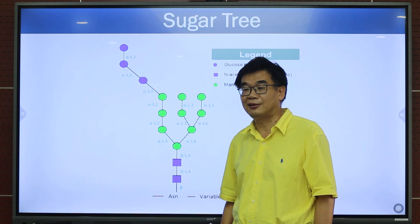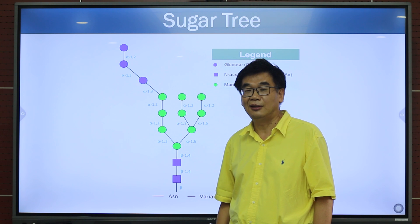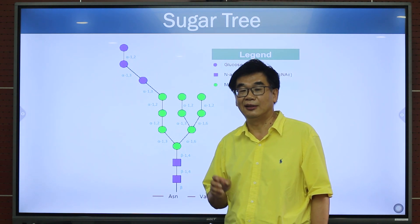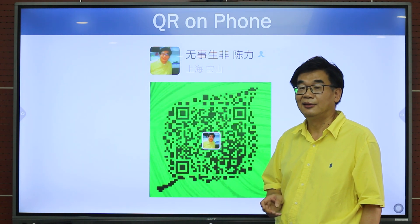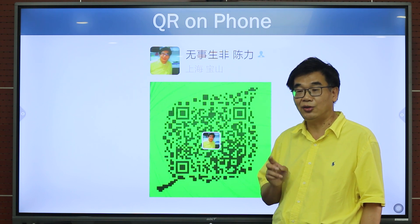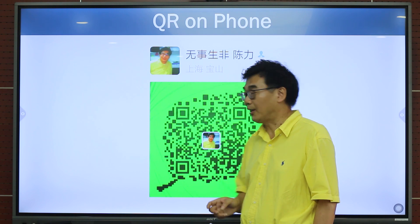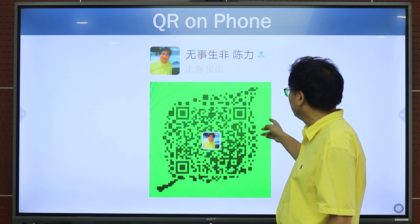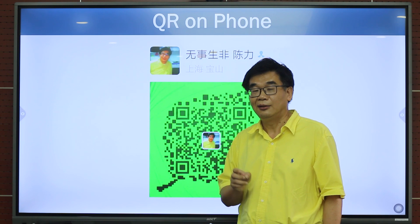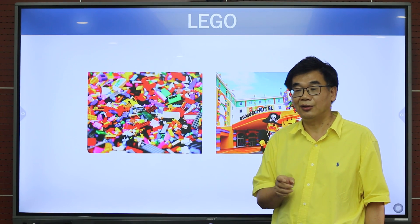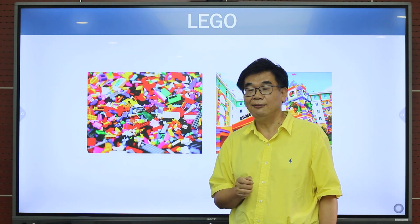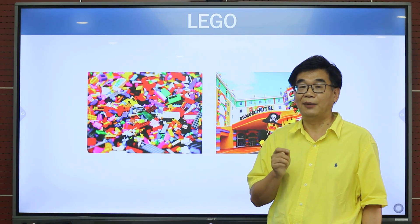50% of the proteins are glycosylated. Our cells are covered with sugar trees, conjugated with proteins and vitamins. We proposed that the sugar trees on the cells function like the QR codes we use in our daily life. We named the sugar tree the biological quick recognition science, or bio-QR. My lab is trying to gain better understanding of sugar trees or bio-QRs.